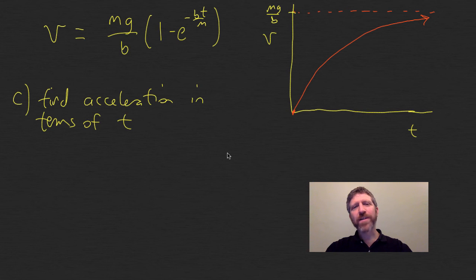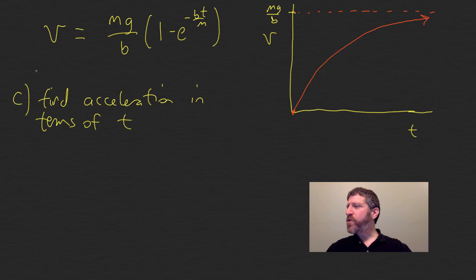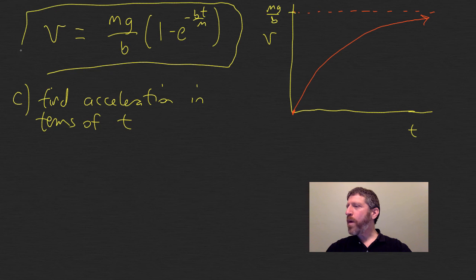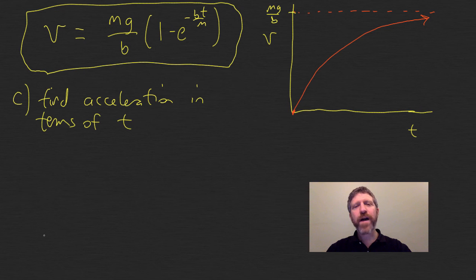For our last step we just have to find the acceleration in terms of t. Here is our derived equation for v: it's mg over b times 1 minus e to the negative bt over m. And mg over b, as you will recall, is our expression for terminal velocity. So we want to find the acceleration.